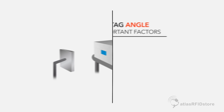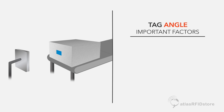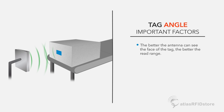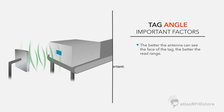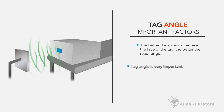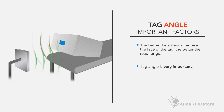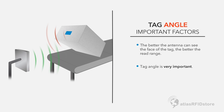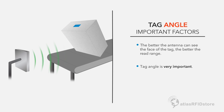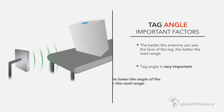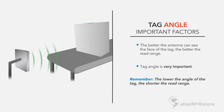Generally speaking, the better the antenna can see the face of the tag, the more read range you will receive, so the angle of the tag should always be considered. The lower the angle of the tag, the shorter the read range you will receive.